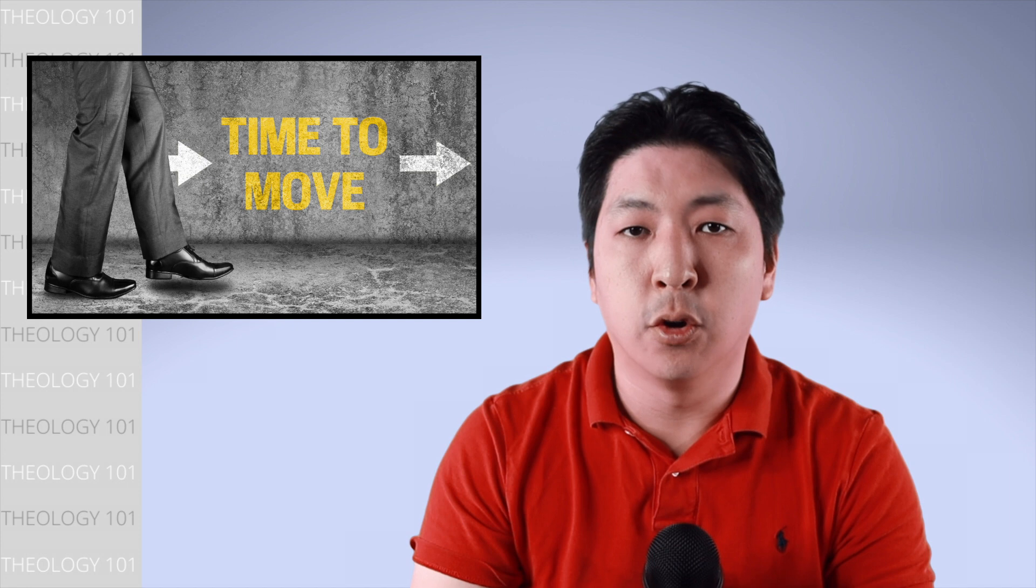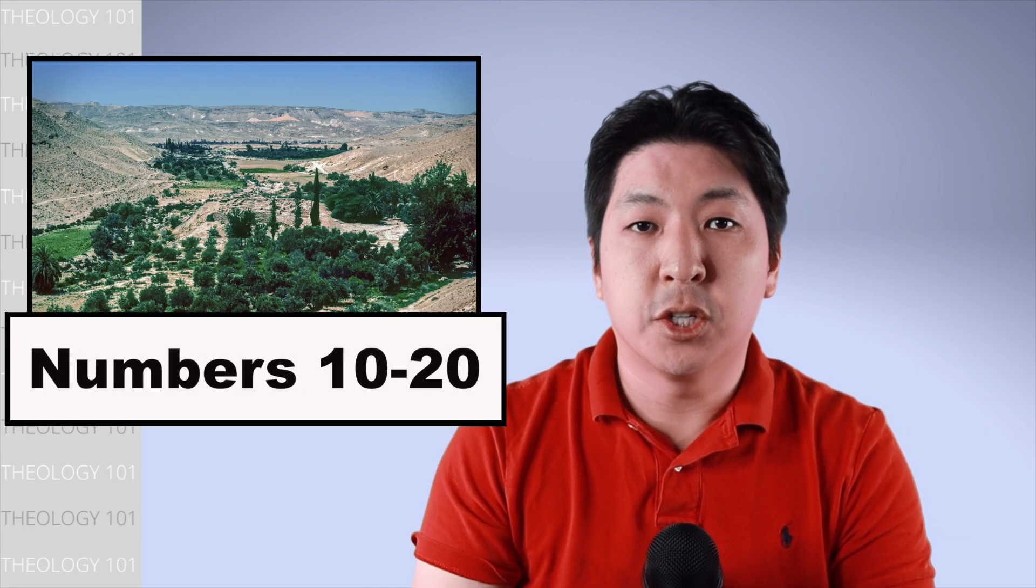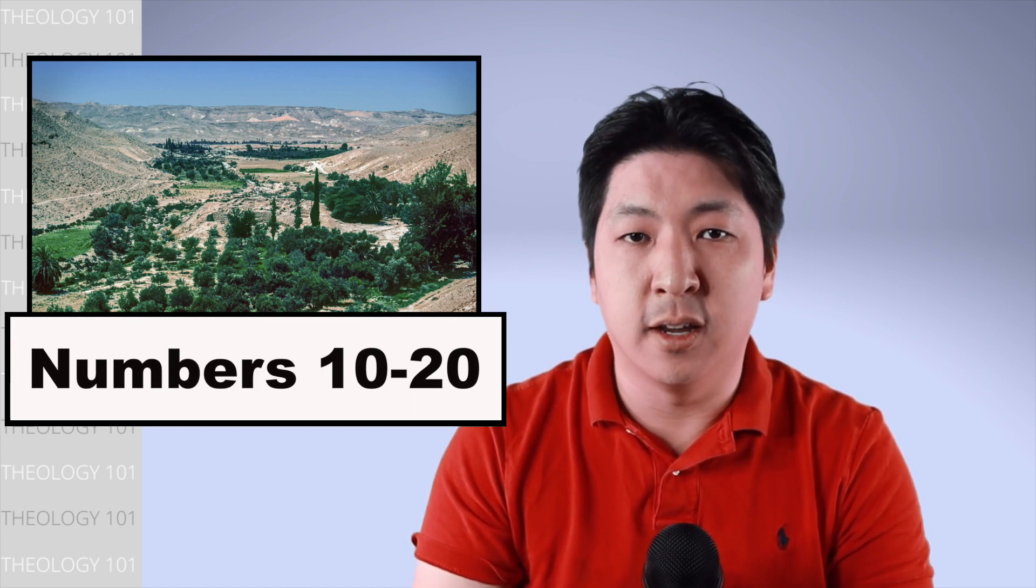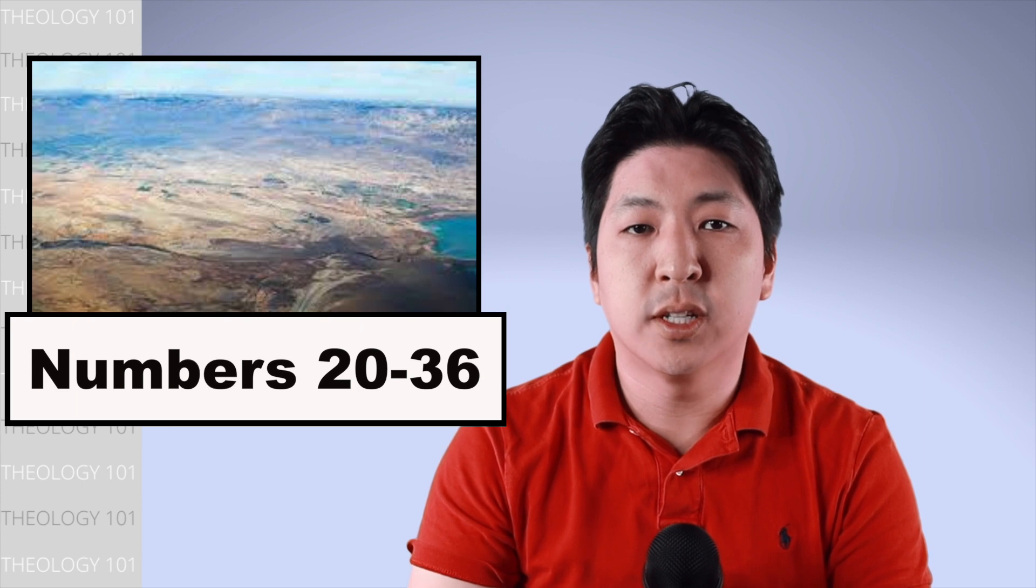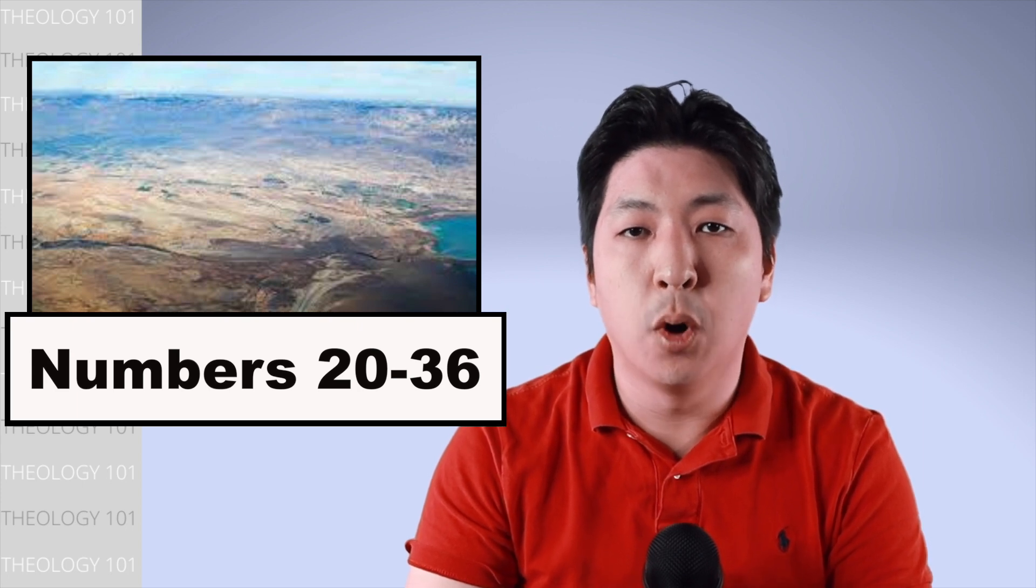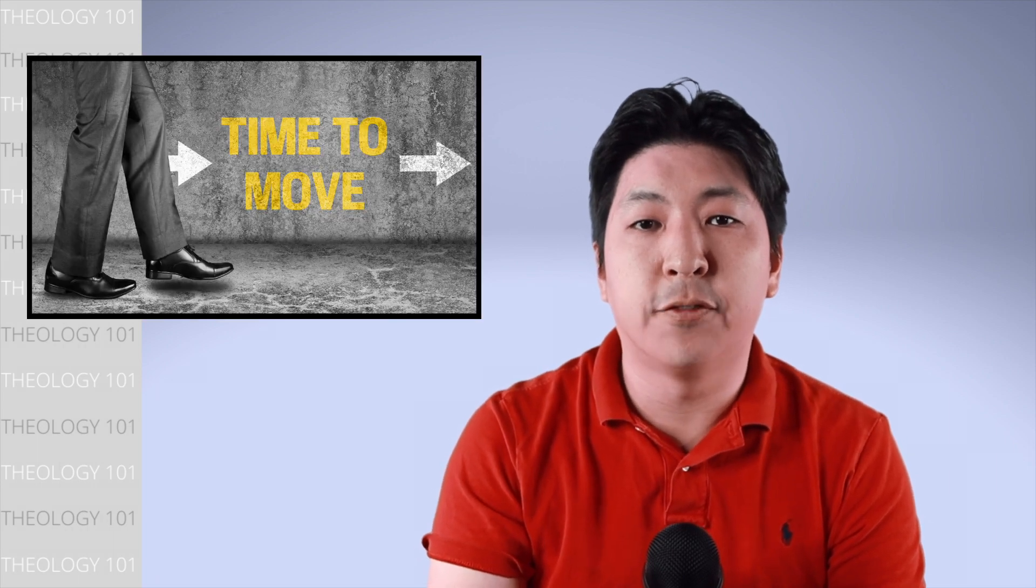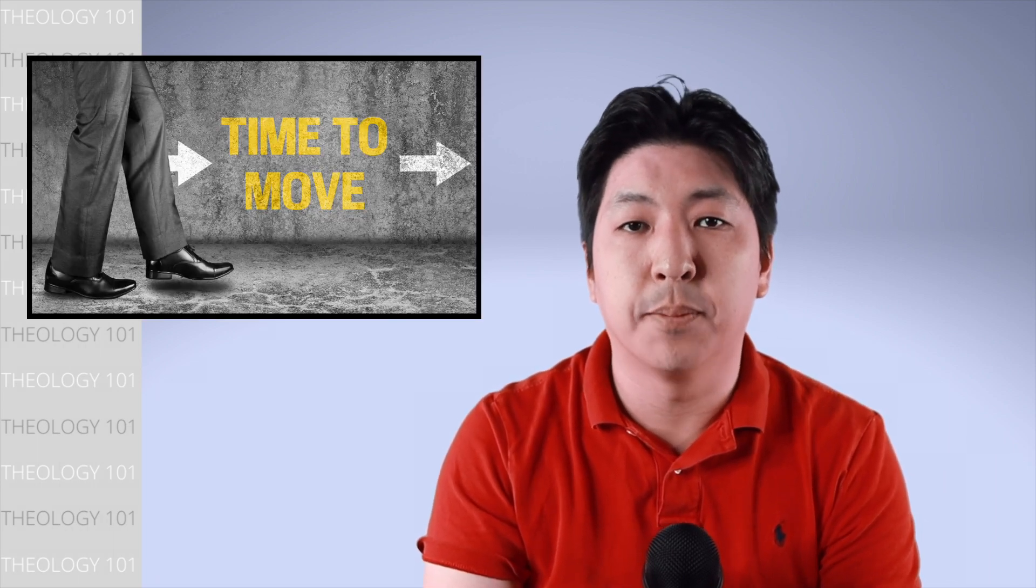A second thing that structures the book of Numbers is geographical movement. Numbers chapter 1 to 10 focuses on Israel at Mount Sinai. Numbers chapter 10 to 20 focuses on the events at Kadesh Barnea. Then Numbers chapter 20 to 36 focuses on the plains of Moab before Israel enters the Promised Land. So we can read the book of Numbers by looking at the different locations the narratives take place.